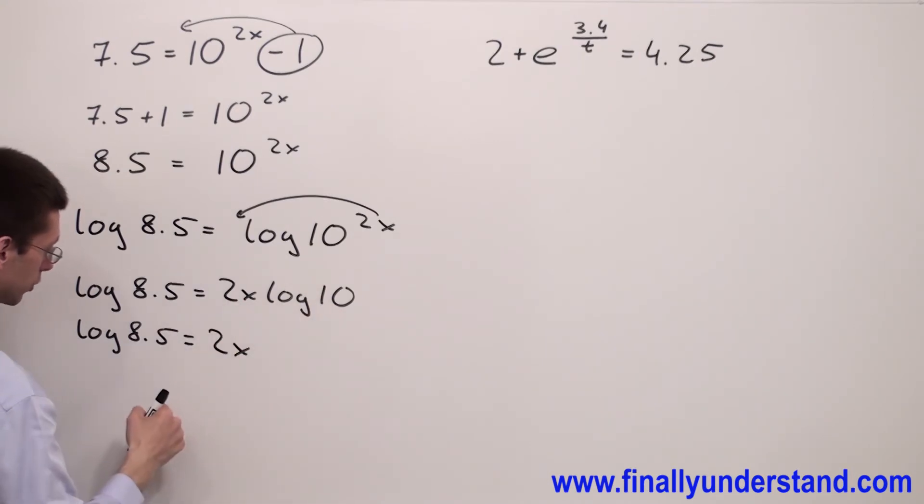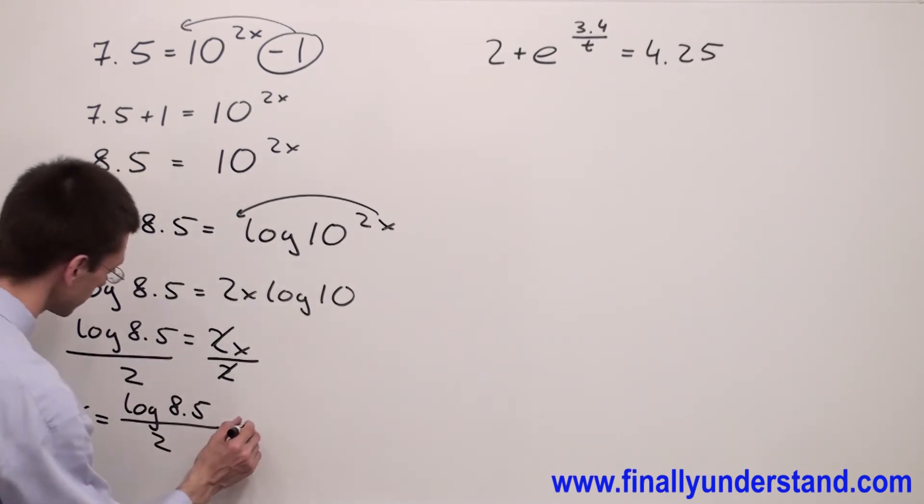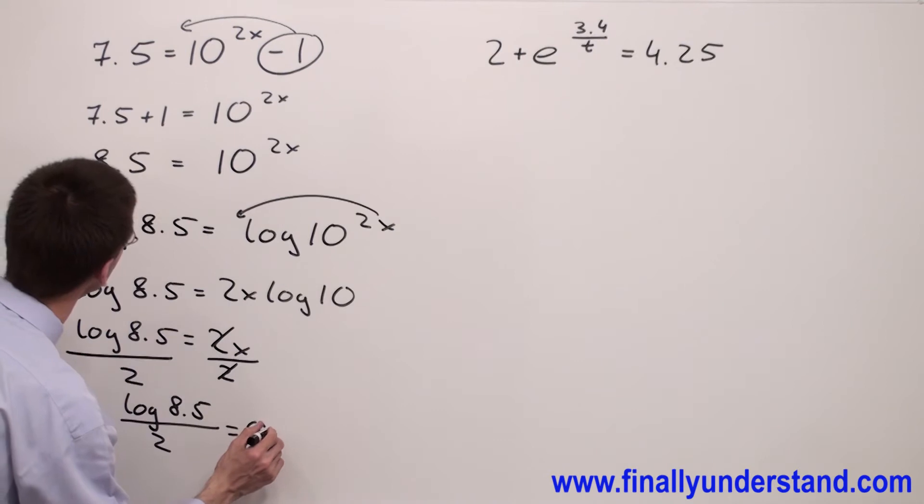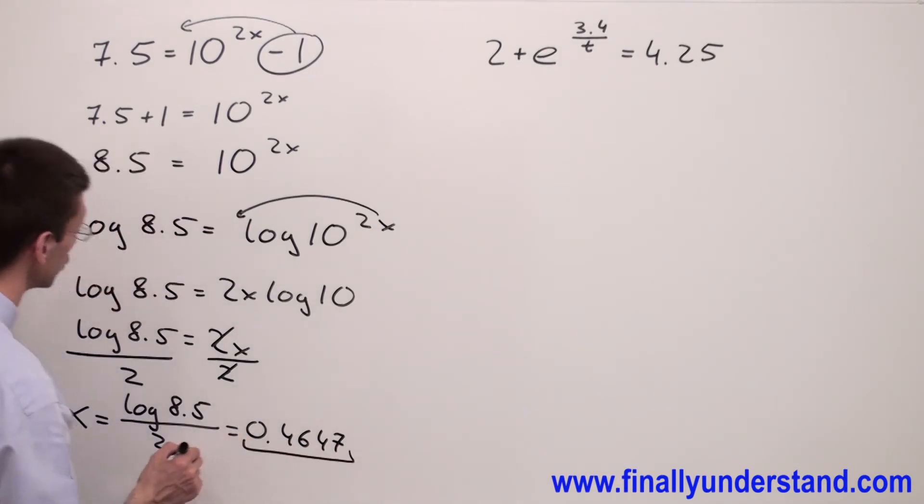Log 8.5 is going to be equal 2x because log of 10 is equal 1. 1 times 2x is simply 2x. In order to find value of x, you have to divide both sides equation by 2. 2 and 2 will cancel out and we have x equals log 8.5 divided by 2. This is equal 0.4647. This is the solution to my problem.